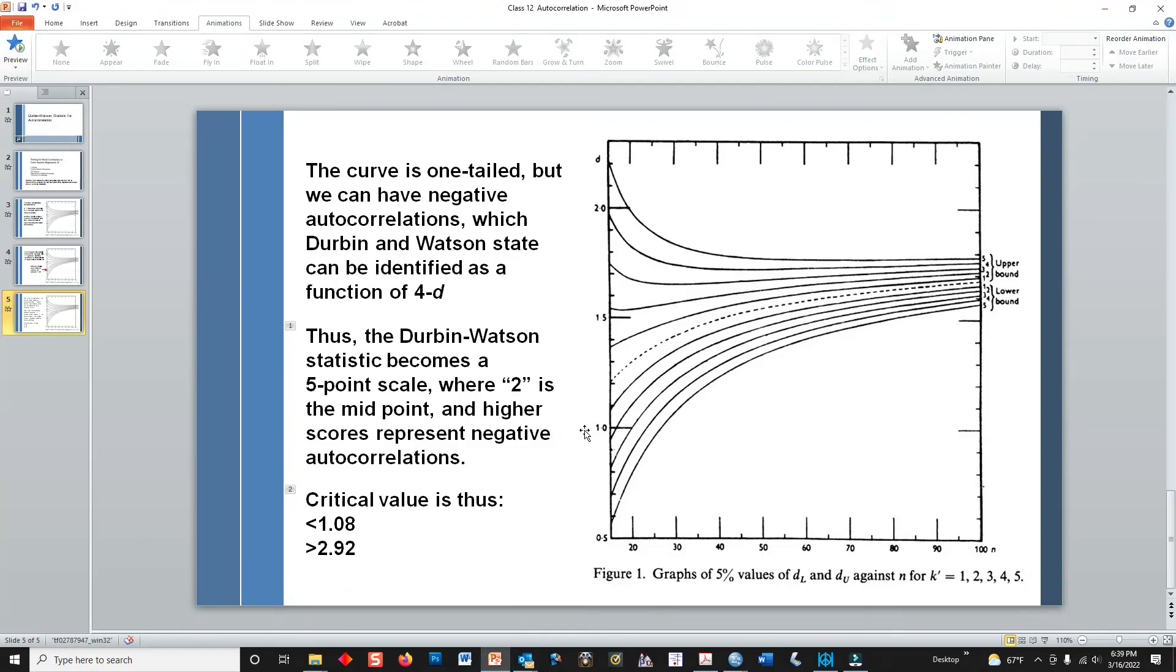If you want to get into the weeds of trying to read this graphic, the critical value here for a single case design study would be anything less than 1.08 or anything greater than 2.92.